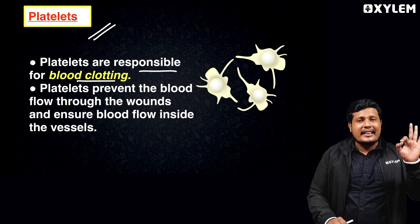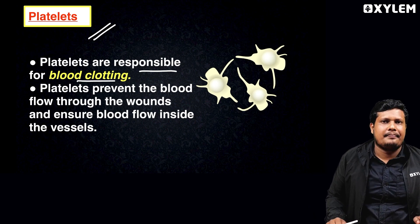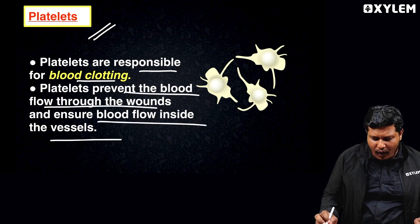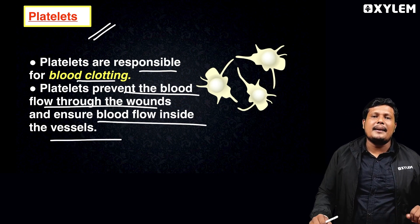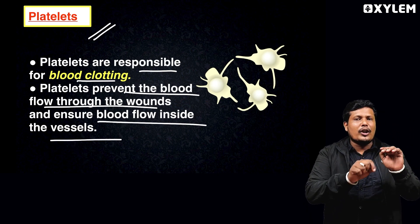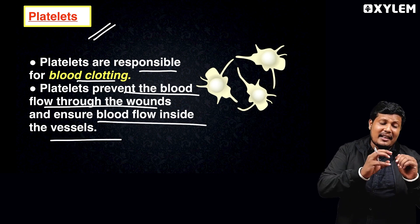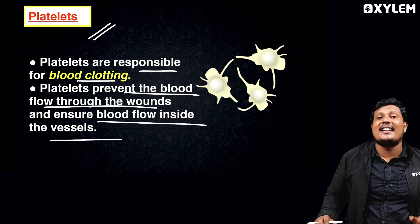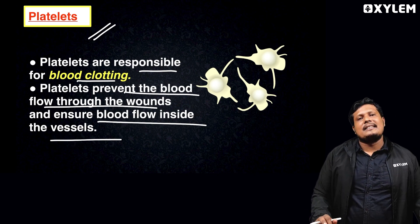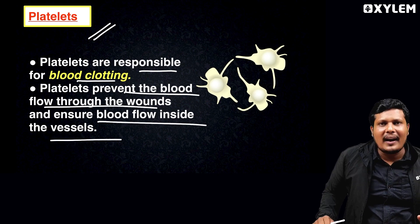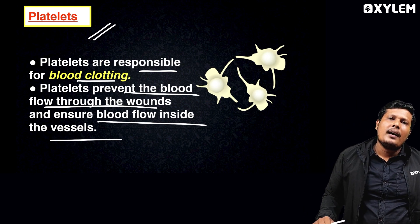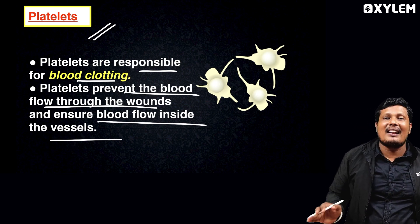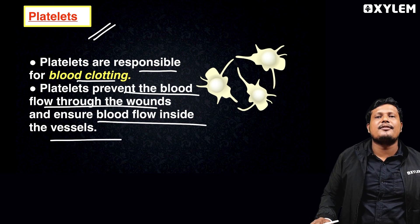Platelets prevent blood flow through a wound and ensure blood flow inside the vessel. To prevent blood loss, platelets ensure blood clotting so blood flow is restricted and blood is saved — and our life is saved. This is very important.